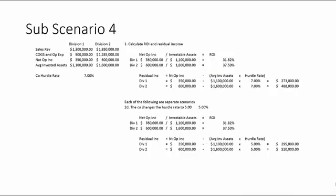Finally, let's look at changing the hurdle rate from 7 percent to 5 percent. Using the original numbers, Division 1's ROI remains 31.82 percent — $350,000 divided by $1.1 million — because the hurdle rate doesn't affect ROI. The new hurdle rate comes into play when calculating residual income: $350,000 minus $1.1 million times 5 percent gives us $295,000. A lower hurdle rate produces a higher residual income.